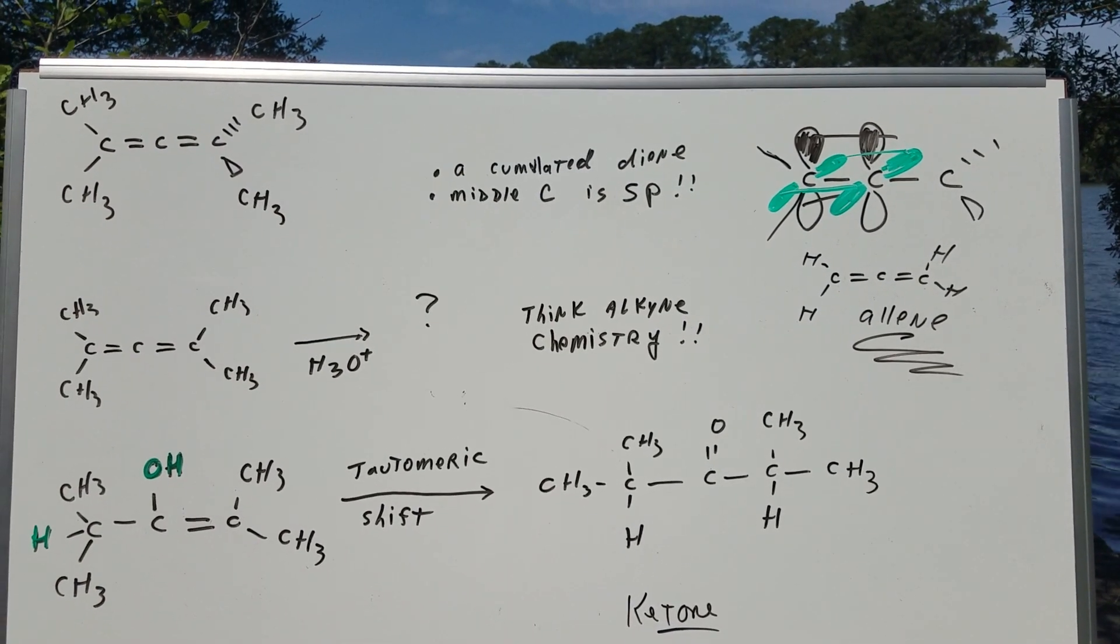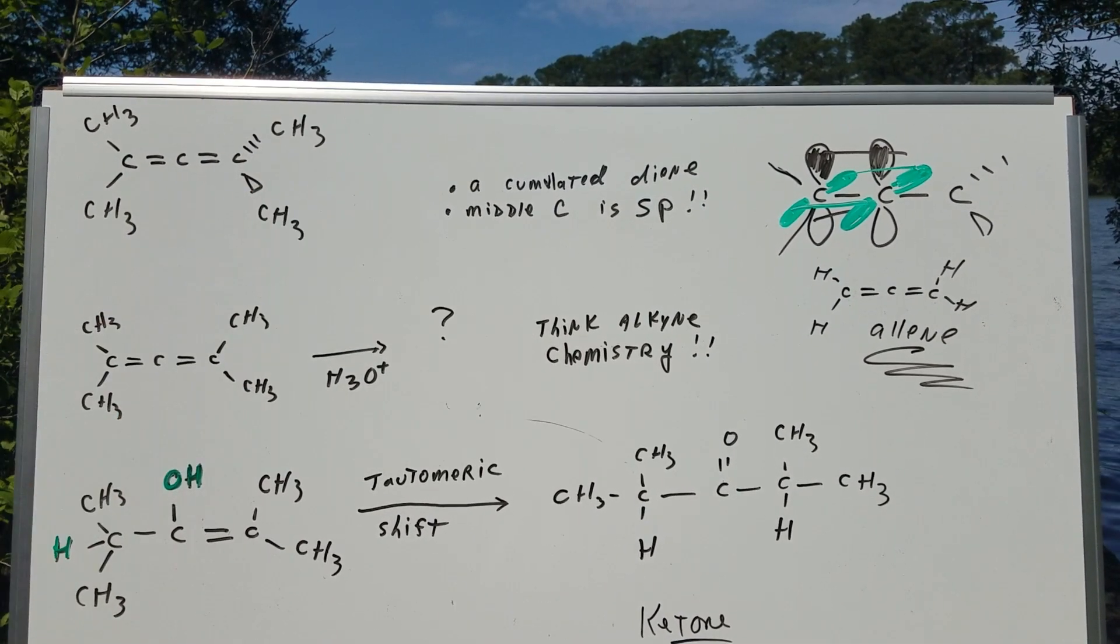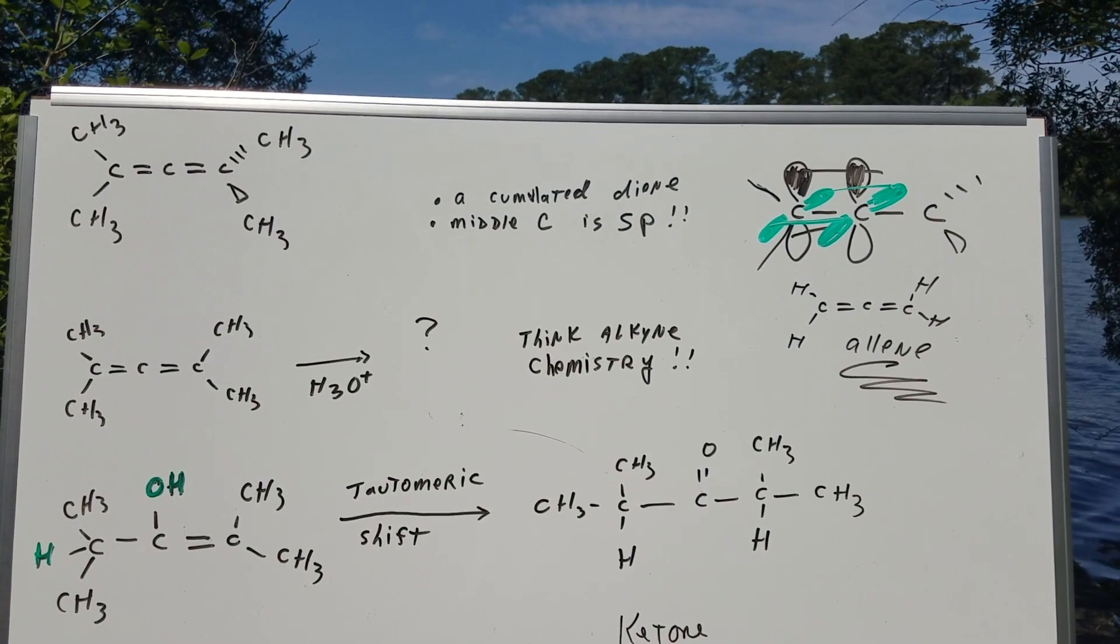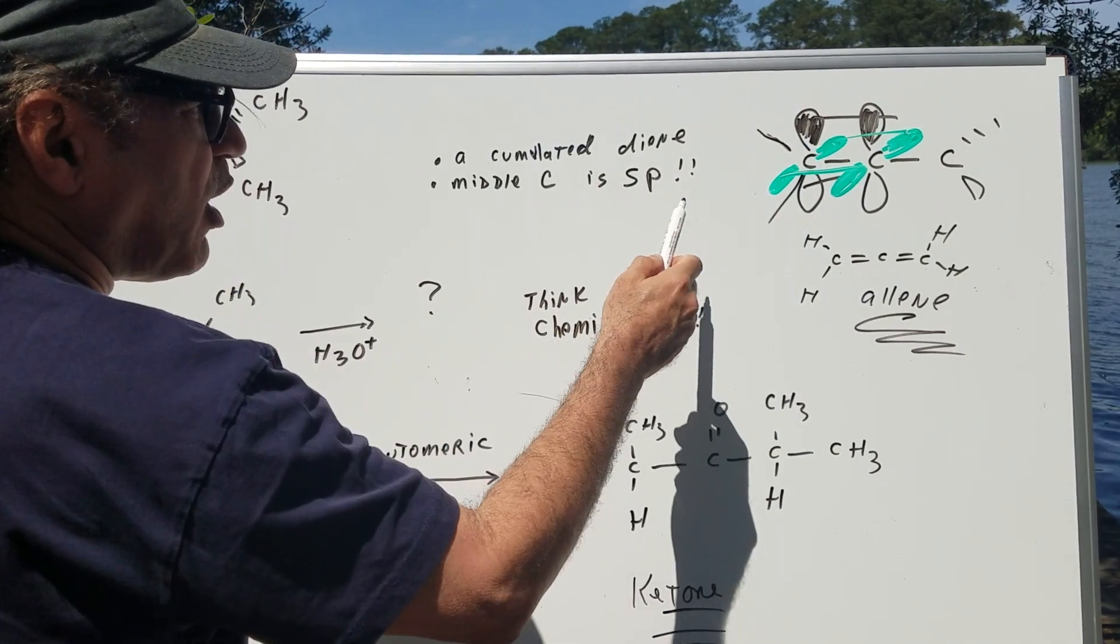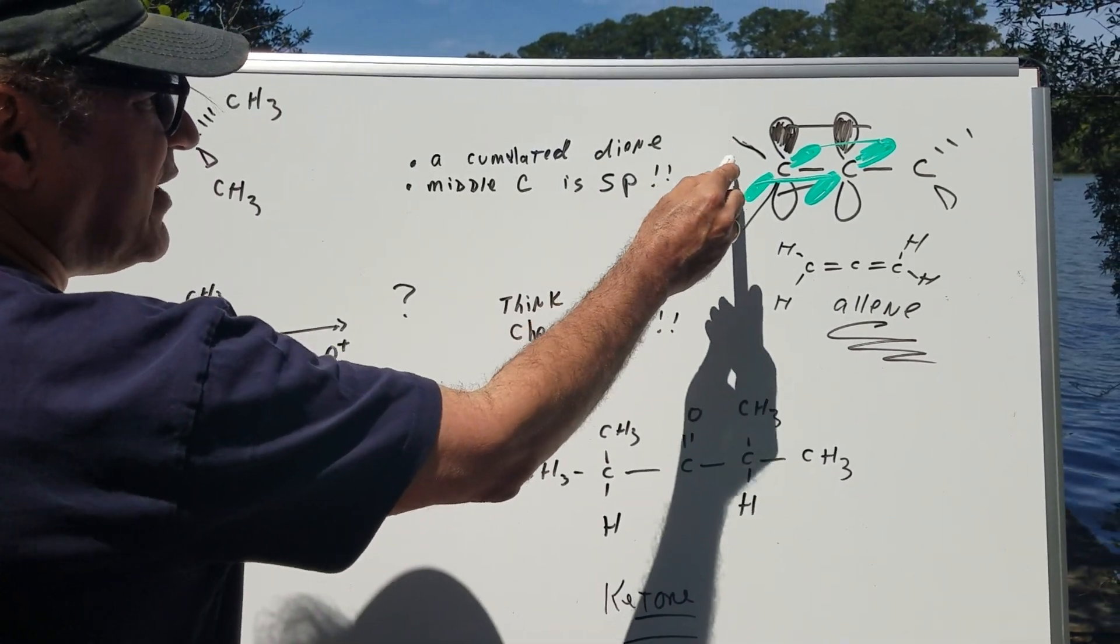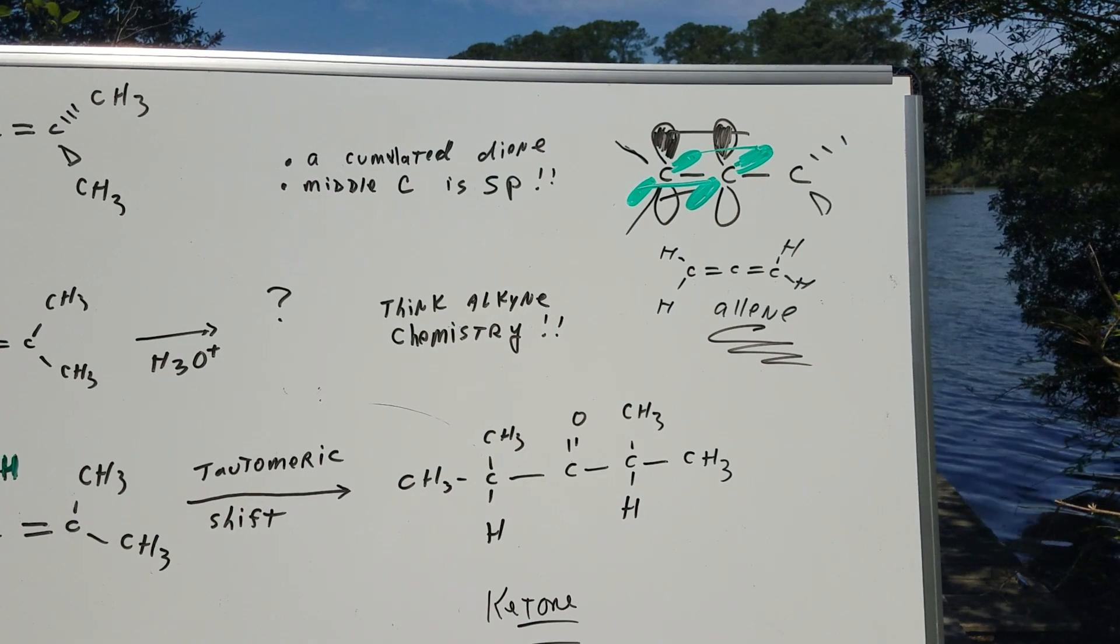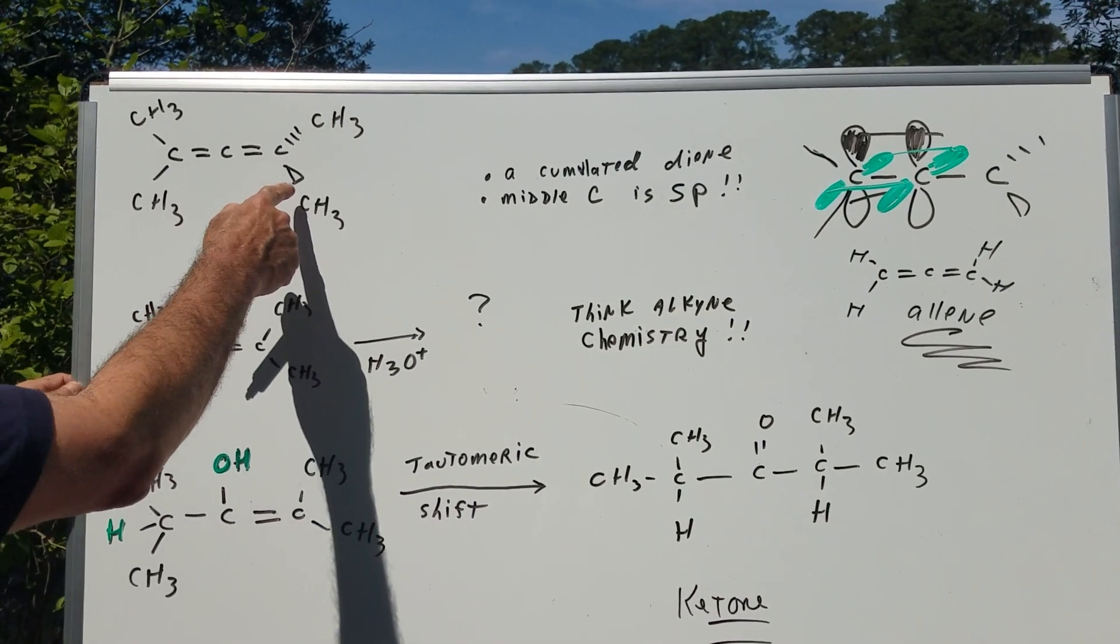So we have an sp carbon right here. If you look at how I drew the orbitals, those orbitals are going to be orthogonal to each other, meaning they're perpendicular. I put them in black and green. Because they're orthogonal to each other, that means that this end on the left and the end on the right are in different planes.